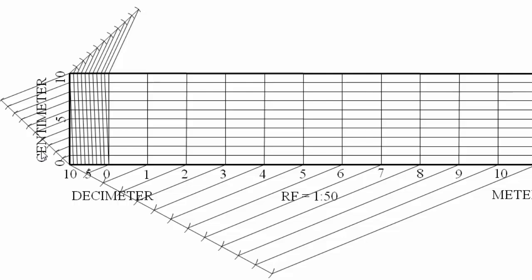We also need to mark some distances. The first distance is 6.48 meters. From zero towards the right we have 6 meters. Towards the left of zero: 1 decimeter is 0.1, so 1, 2, 3, 4 gives 0.4. Then for the centimeters: 1, 2, 3, 4, 5, 6, 7, 8 gives 0.08. So from this point to this point we have 0.48, and from this point we have 6, making the total 6.48 meters.